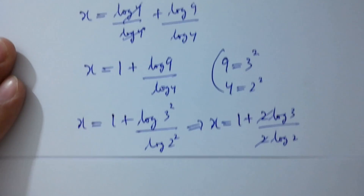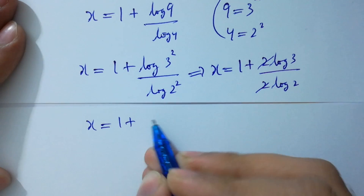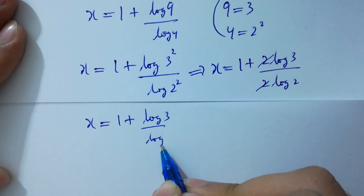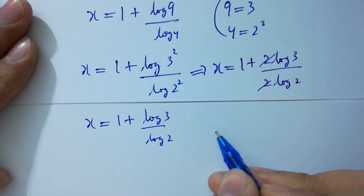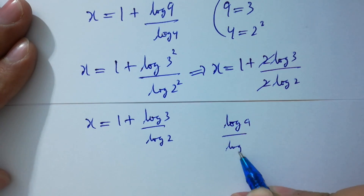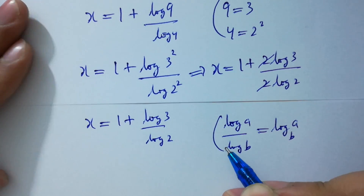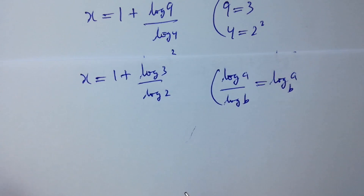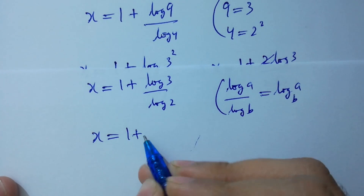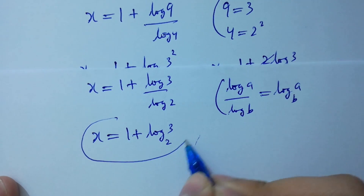x equals 1 plus log 3 over log 2, which is x equals 1 plus log 3 to the base 2. That is the value of x.